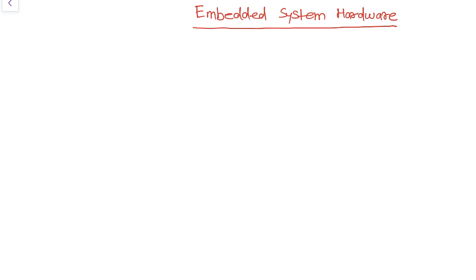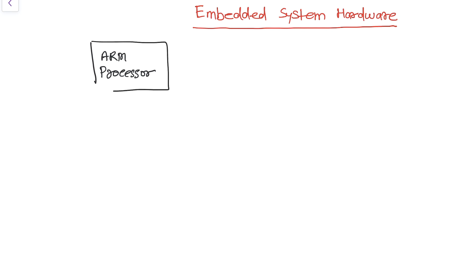Let's first take the ARM processor here. There is a core which is known as the ARM processor. And then the ARM processor is attached with the interrupt controller. We have here an interrupt controller — this is the interrupt controller.